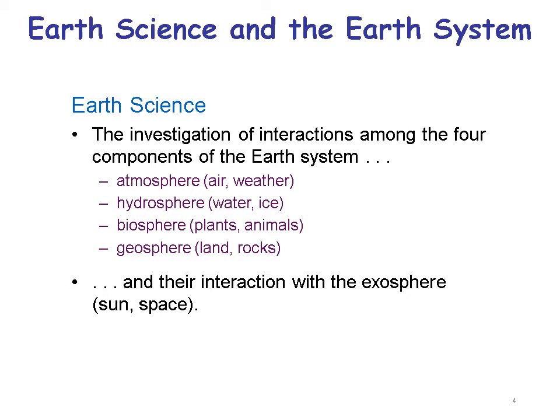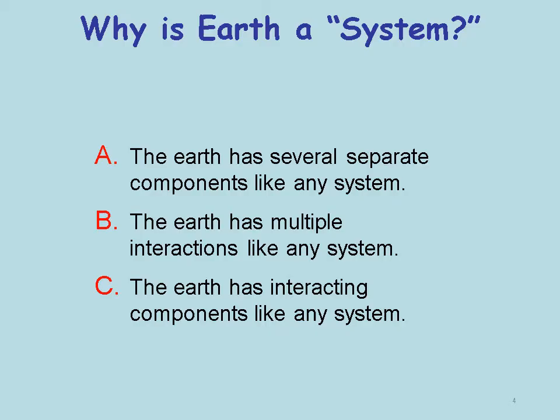Earth Science and the Earth System. Earth Science is the investigation of interactions among the four components of the Earth System: Atmosphere — air, weather, and such; Hydrosphere — water and ice; Biosphere — plants, animals; Geosphere — land, rocks. And their interaction with the exosphere — sun and space.